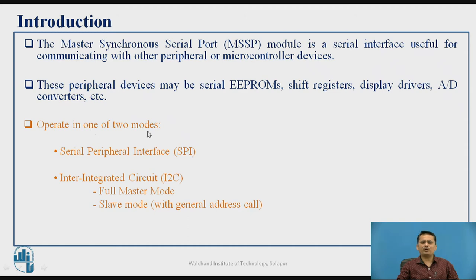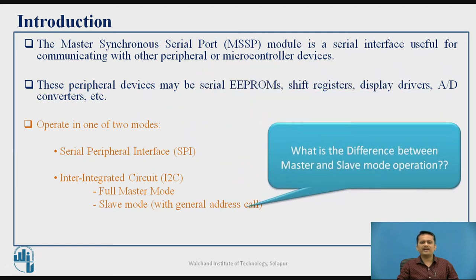This MSSP module works in two different modes — either SPI or I2C — and in both SPI and I2C, they can work in two modes: master and slave. The difference between master and slave mode comes into the picture in synchronous communication only. In synchronous communication, you need to send the clock signal along with the data. The device which sends the clock is called the master, and the other device uses that clock for synchronization. This is the basic difference between master and slave.